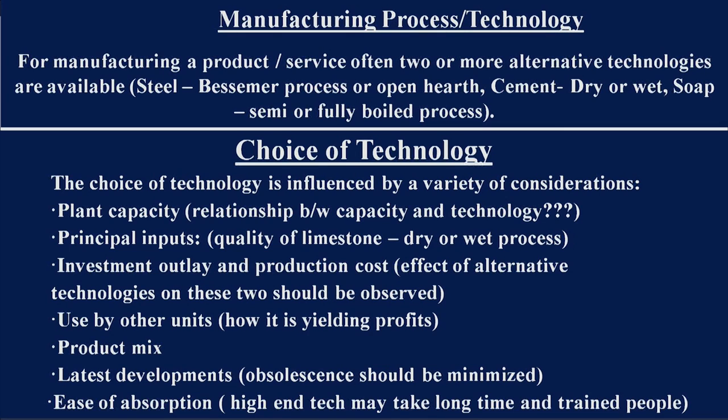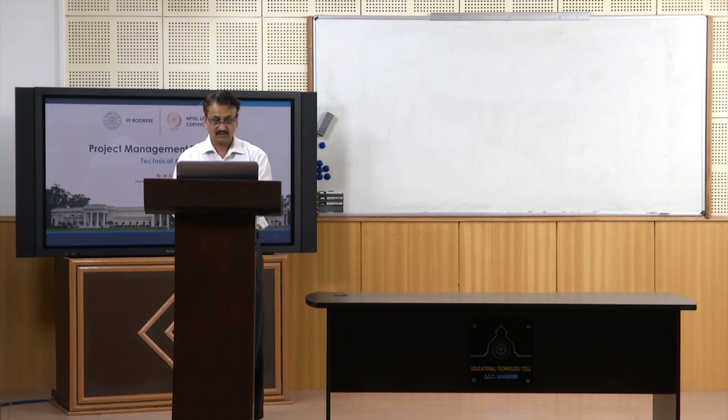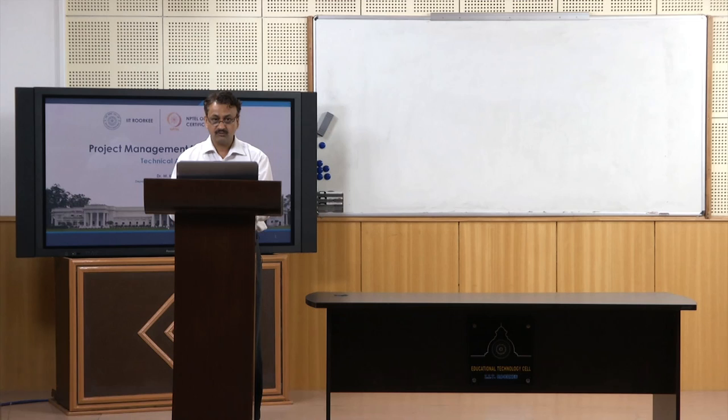The most important point is manufacturing processes. Whenever you make a product, you will most of the time have different methods of manufacturing that product. In very few situations will you have only one manufacturing process. For example, if you are making steel, you can either go for the Bessemer process or the open hearth process. Similarly, for a cement plant, you can make cement by either dry process or wet process. You can have multiple processes to make a product — choosing which one is a critical decision.